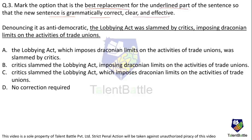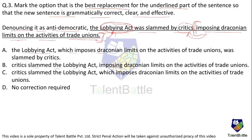Next question: 'Denouncing it as anti-democratic, the lobbying act was slammed by critics, imposing draconian limits on the activities of trade unions.' The phrase 'imposing draconian limits on the activities of trade unions' describes the lobbying act, so it should come immediately after 'the lobbying act,' not after 'critics.' As written, it sounds like the critics are imposing draconian limits — that is the first error.